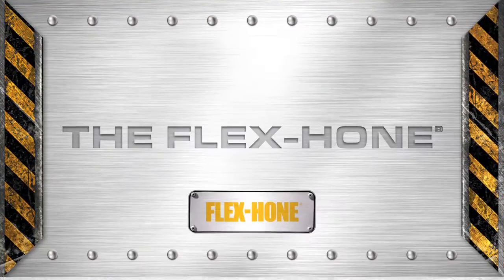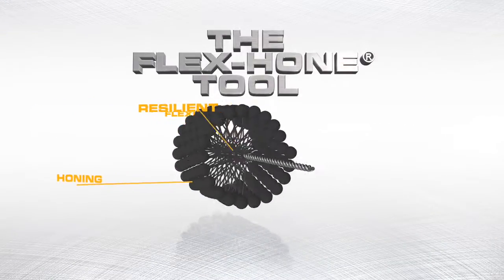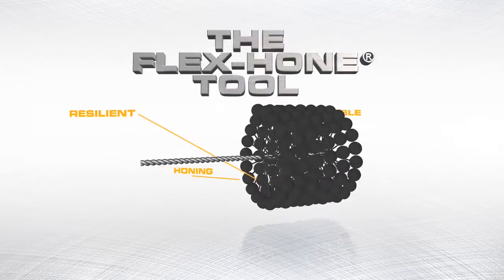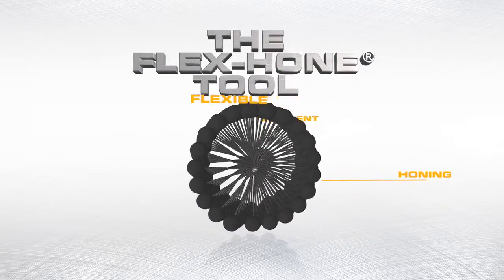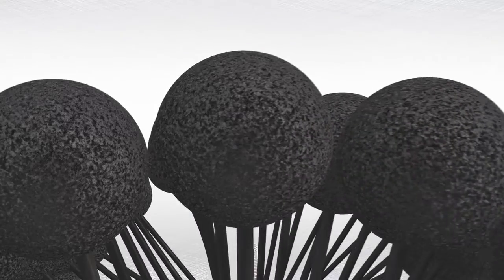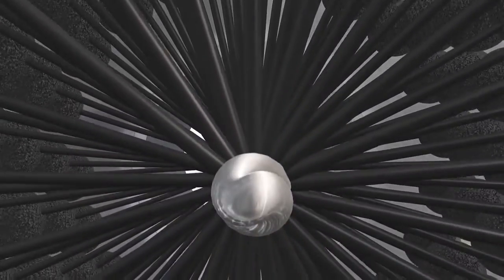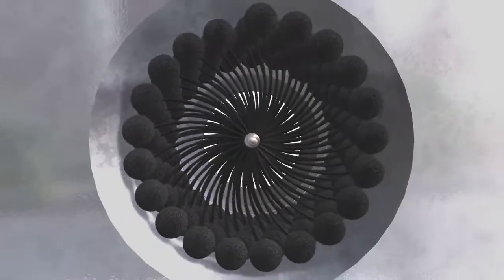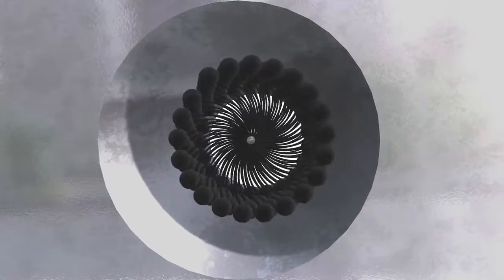The Flexhone is a patented and proprietary resilient, flexible honing tool with a soft cutting action. The abrasive globules are bonded to the ends of flexible nylon filaments. Each has independent suspension that assures the Flexhone to be self-centering, self-aligning to the bore, and self-compensating for wear.